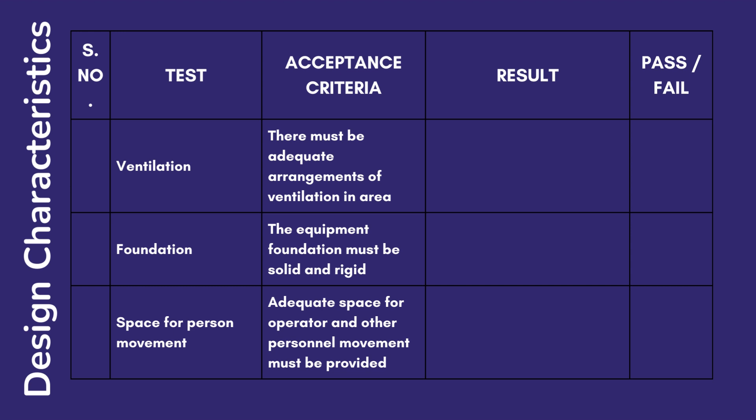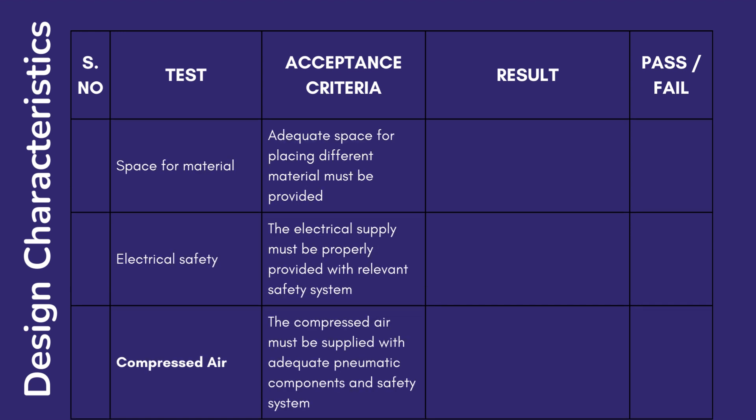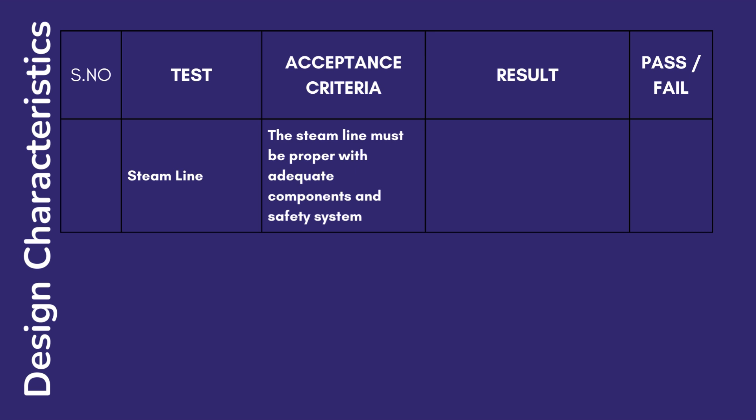Continued design considerations: Space for personal movement — adequate space for operator and other personnel movement must be provided. Space for material — adequate space for placing different materials must be provided. Electrical safety — the electrical supply must be properly provided with relevant safety systems. Compressed air — the compressed air must be supplied with adequate pneumatic components and safety systems. Steam line — the steam line must be properly installed with adequate components and safety systems.